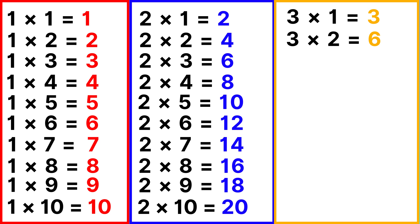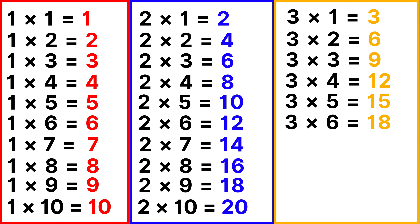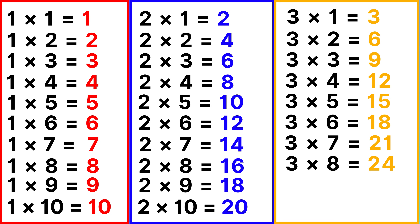Table of 3: 3 ones are 3, 3 twos are 6, 3 threes are 9, 3 fours are 12, 3 fives are 15, 3 sixes are 18, 3 sevens are 21, 3 eights are 24, 3 nines are 27.